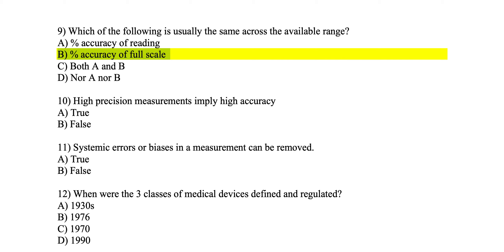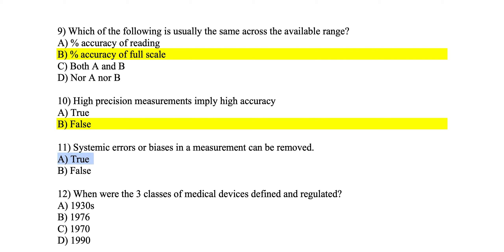Number 10: high precision measurements imply high accuracy — true or false? That is false. High precision does not mean high accuracy. Number 11: systematic errors or biases in a measurement can be removed — that is true. We can remove them in two ways: by doing a calibration, or by setting up reference values. Calibration is the most important method used to remove errors and biases.